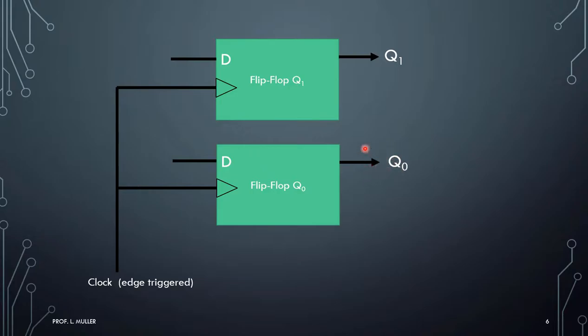So what we need to do is design some sort of circuit to feed the Qs back to here. So when the pulse comes in, depending on the current value of Q, the future Q will emerge.